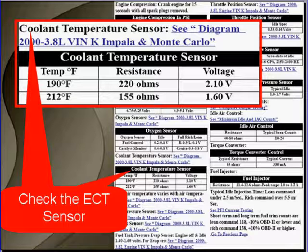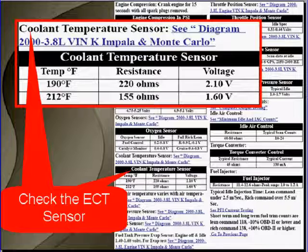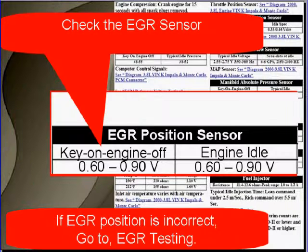Then, check the ECT. You would have to have an ECT that is showing you a very warm engine, a hot engine, to cause a no-start. So you're actually looking for an ECT that's higher than normal. Then, check the EGR sensor. If the EGR position is incorrect, stop and go to EGR testing at this point.